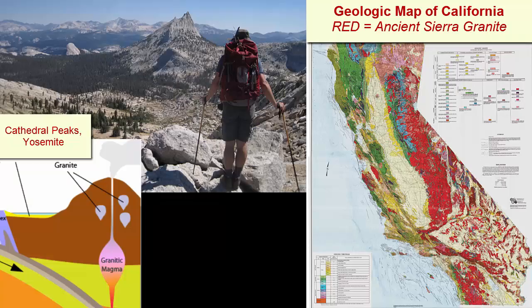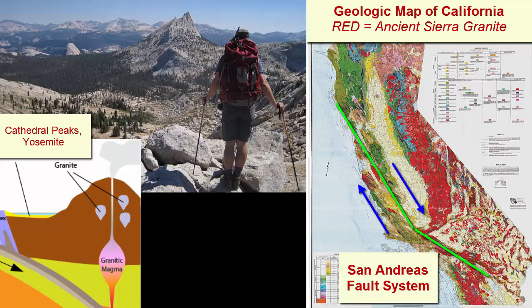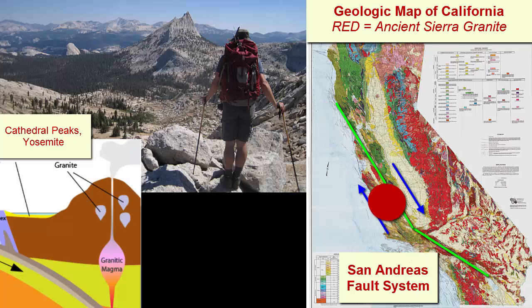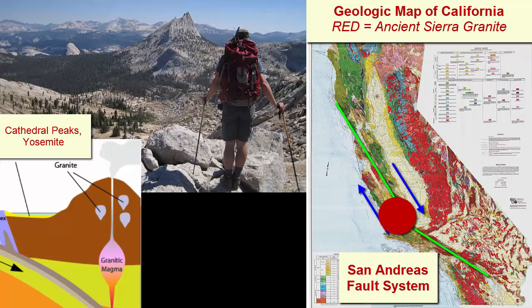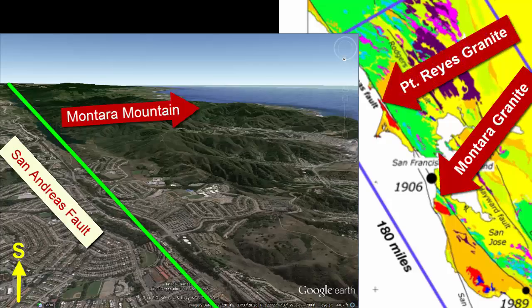Let's leave this volcanic region and return to the remnants of the ancient subduction zone volcanoes, now exposed as granite in the central and western Sierras. As a result of the San Andreas transform motion, sections of the southern Sierra Nevada granite were separated from their origination spot and carried northward — visible today as far north as Point Reyes, as well as making up the rock of Montara Mountain and the Farallon Islands.